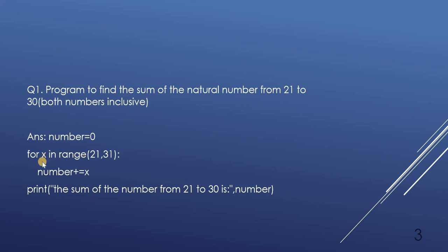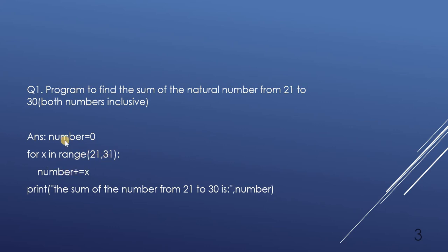We will total the value of x from 21 to 31. Whatever value comes in x will be added (plus) to the variable 'number'. This is our program. I will show its output in your live class. In the last step we print the variable 'number' which holds the sum.